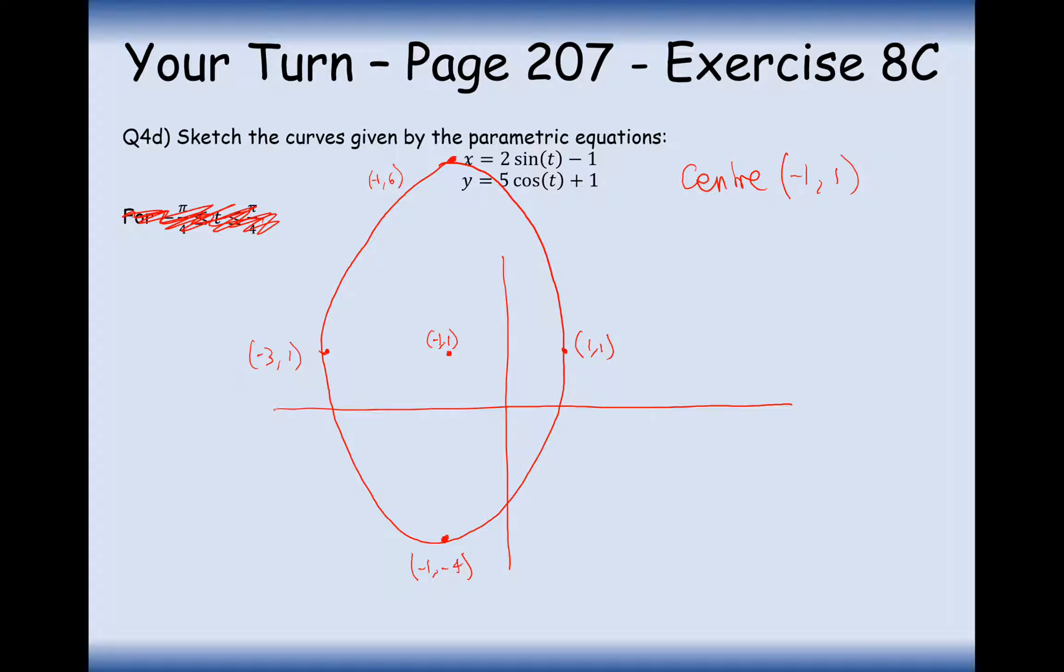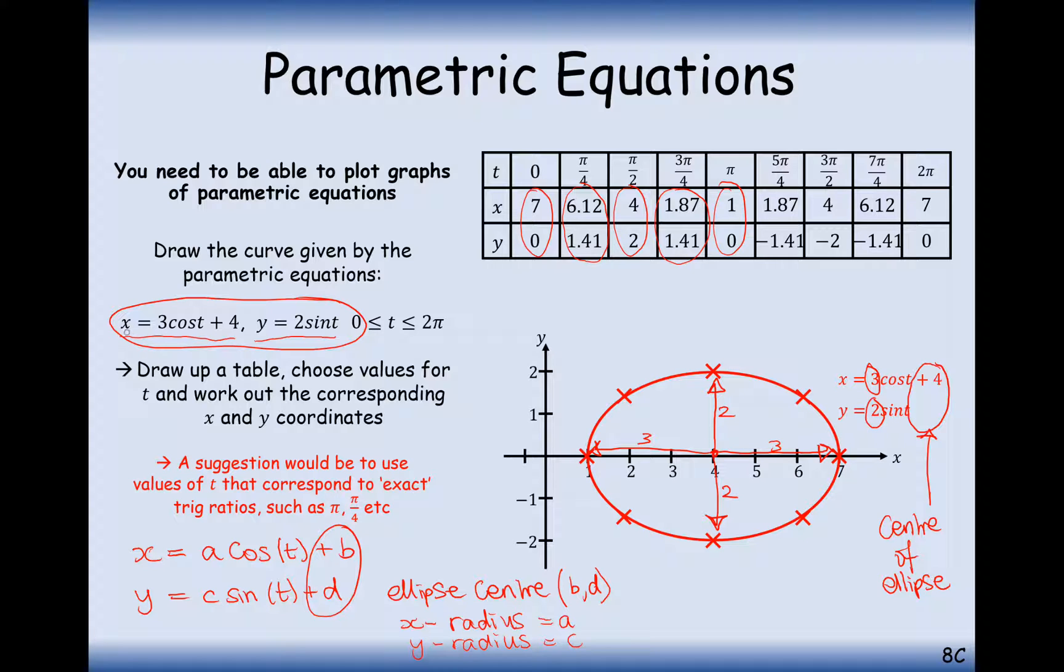And there we are. That's the equation of the ellipse. Now notice here something quite interesting in that the x equation had a cos on it and the y equation had a sine on it.